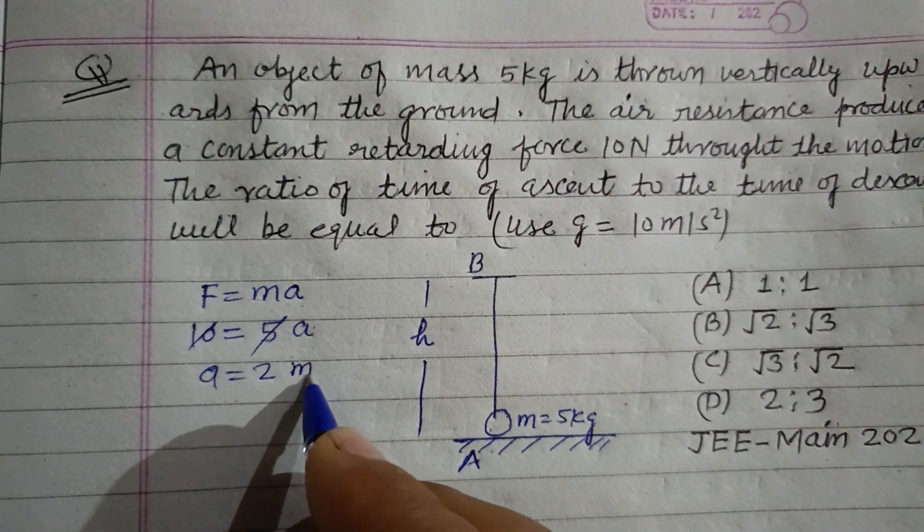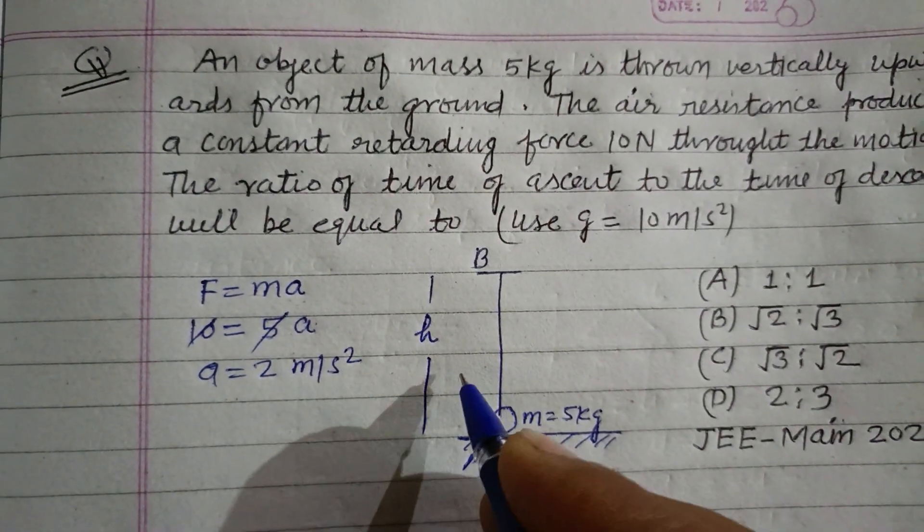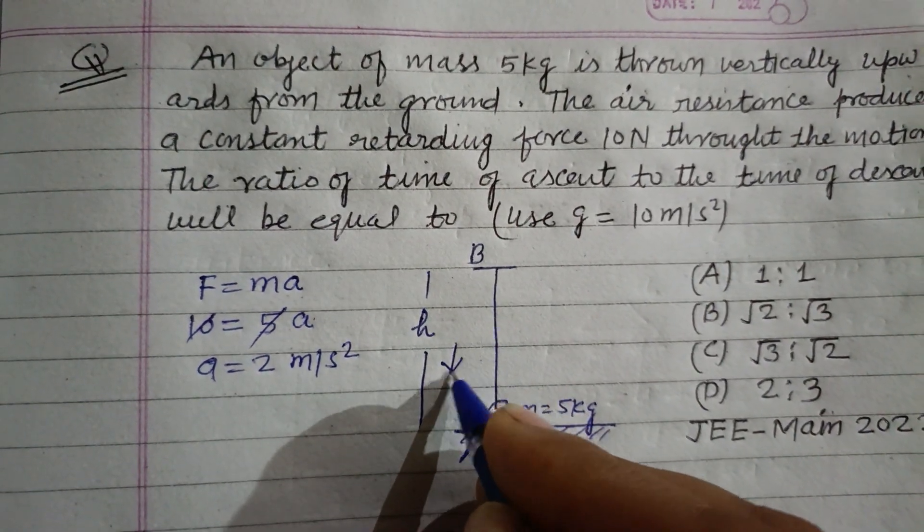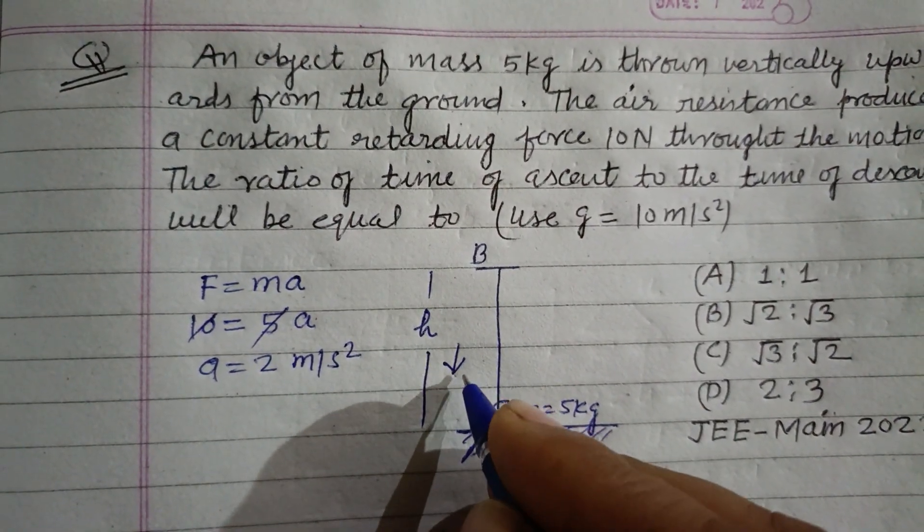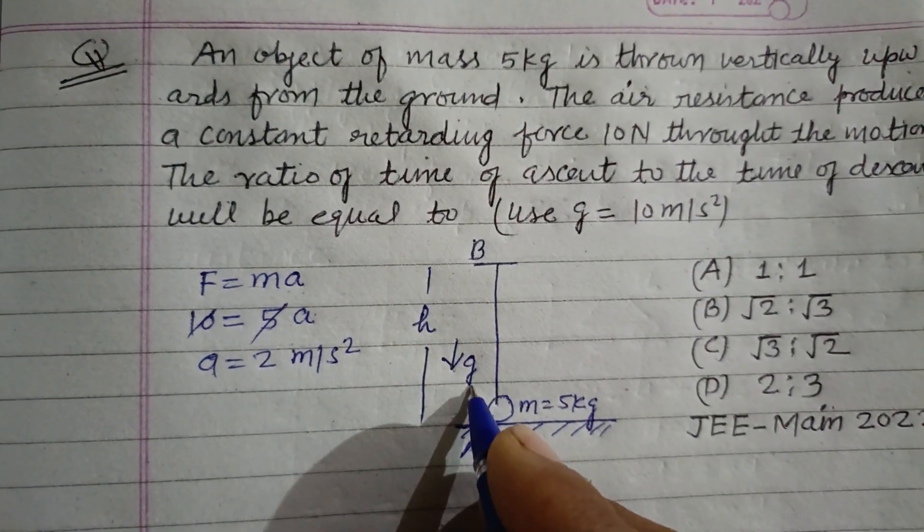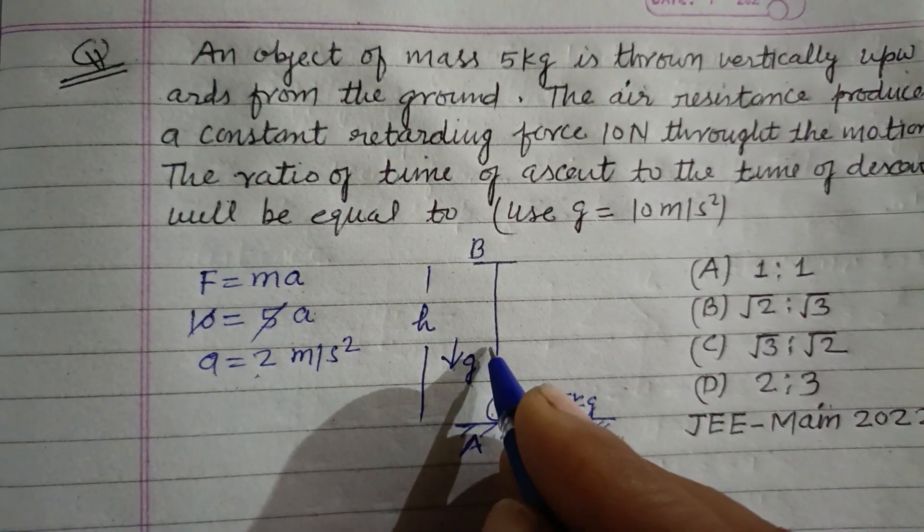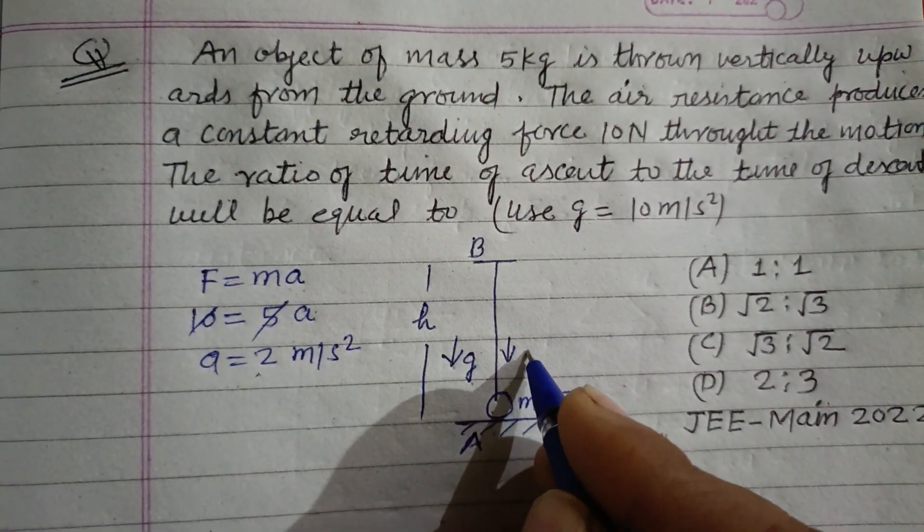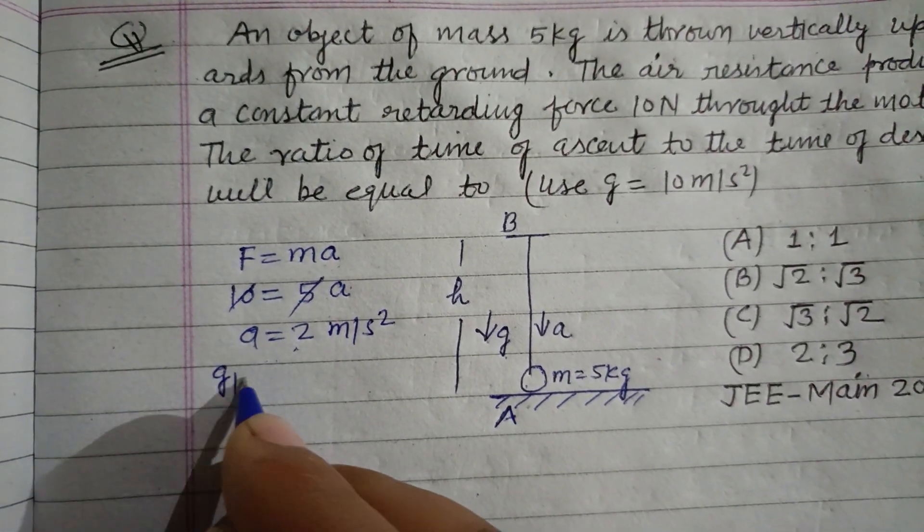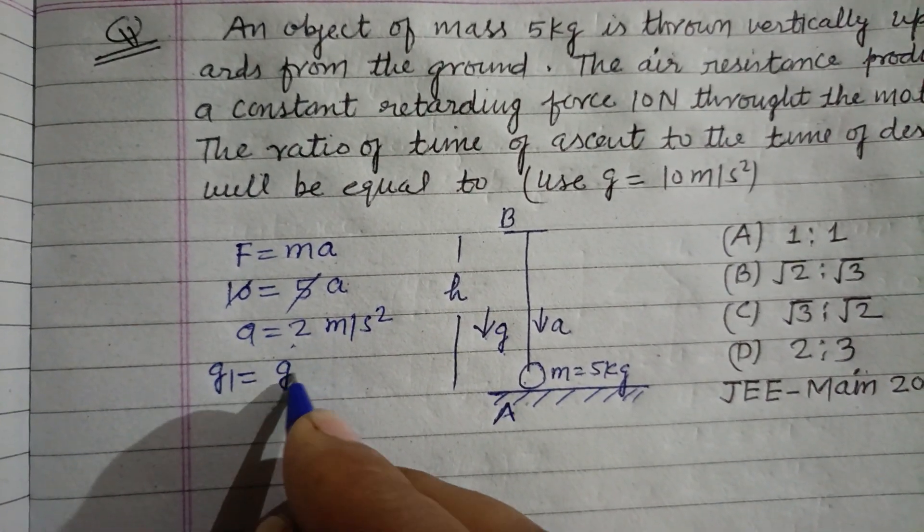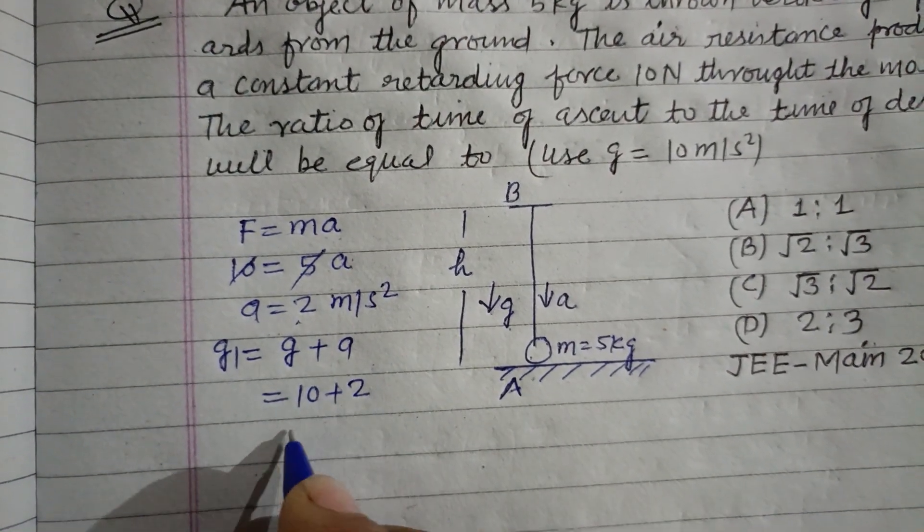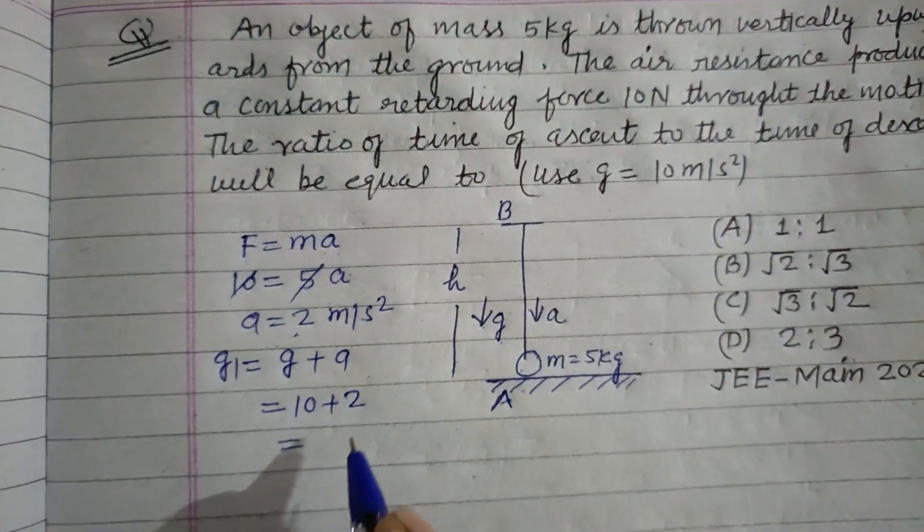When the body is moving in the upward direction, the acceleration due to gravity opposes motion, so it works in downward direction, and this resistance also works in downward direction. Therefore, total resistance g1 equals g plus a, that is 10 plus 2, which equals 12 meters per second squared.